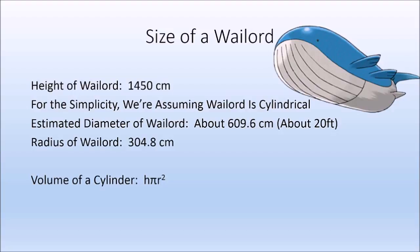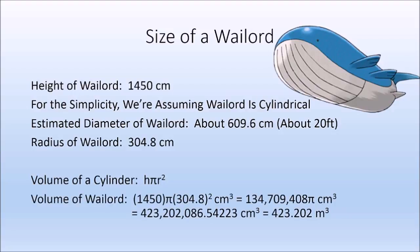The volume of a cylinder is height × πr². The radius of Wailord is 304.8 centimeters — half its diameter. Therefore, the volume of Wailord is 1450 × π × 304.8² cubic centimeters, which is roughly 134,709,408π cubic centimeters, or approximately 423,202,086 cubic centimeters — about 423.2 cubic meters. That is pretty big, but it is the biggest Pokémon in size, so it makes sense.